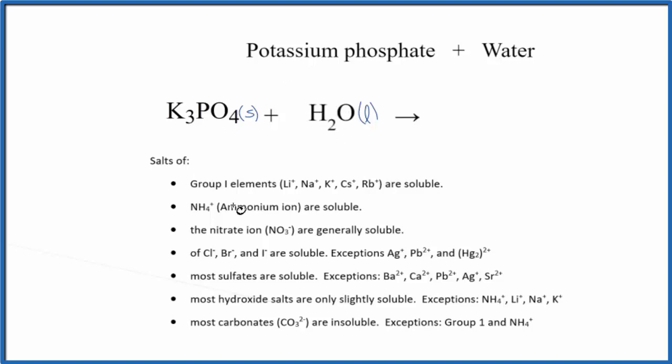So we can look at the solubility rules here to help us with that. And the first rule says group 1 elements, they are soluble. Potassium is in group 1, so we know it's going to dissolve when we put it in water. It'll split apart into its ions.